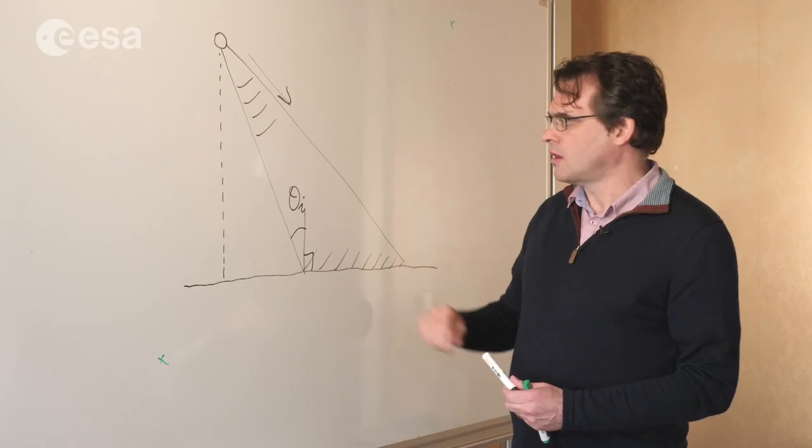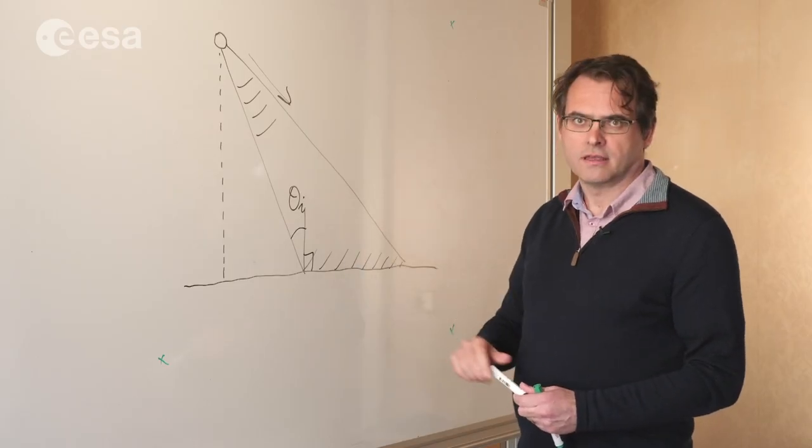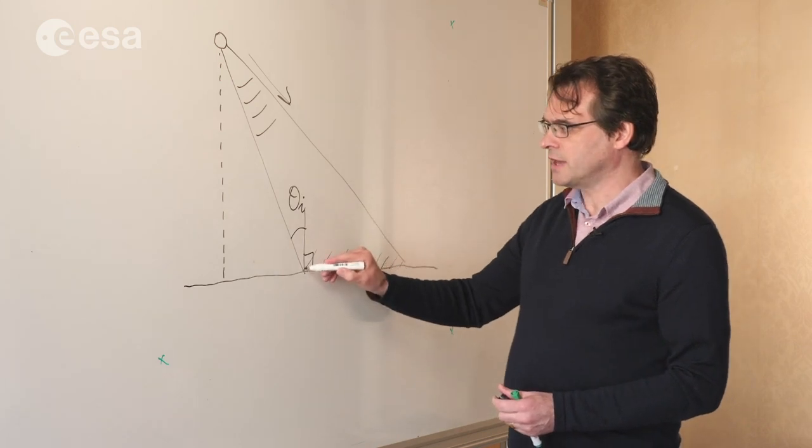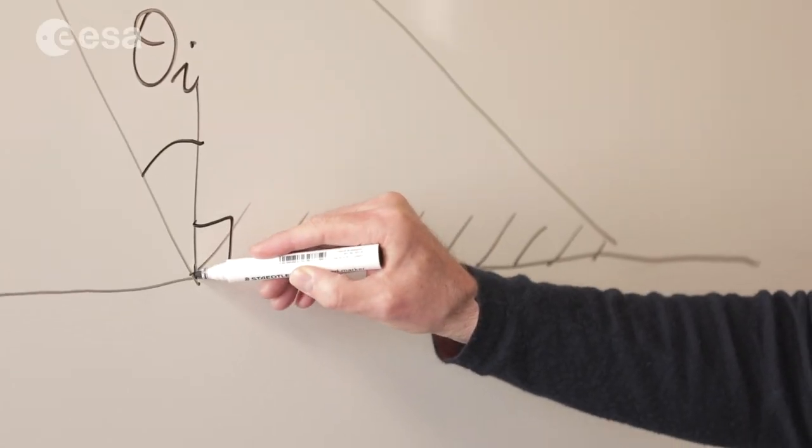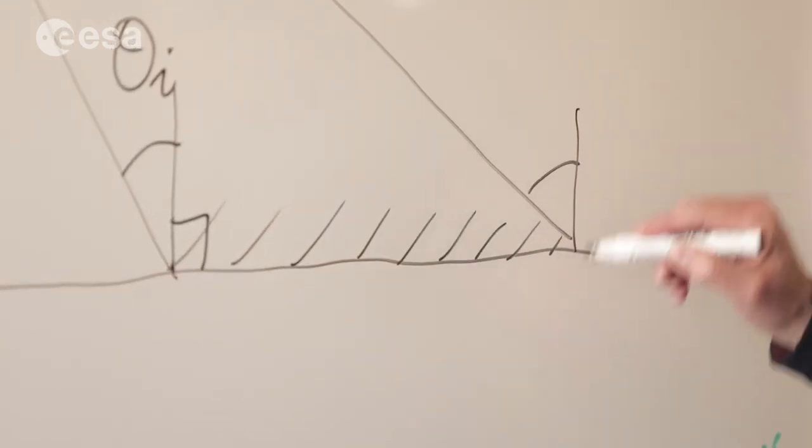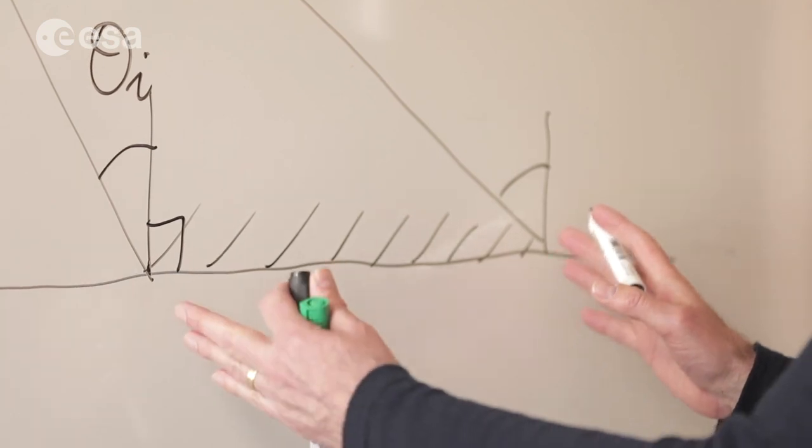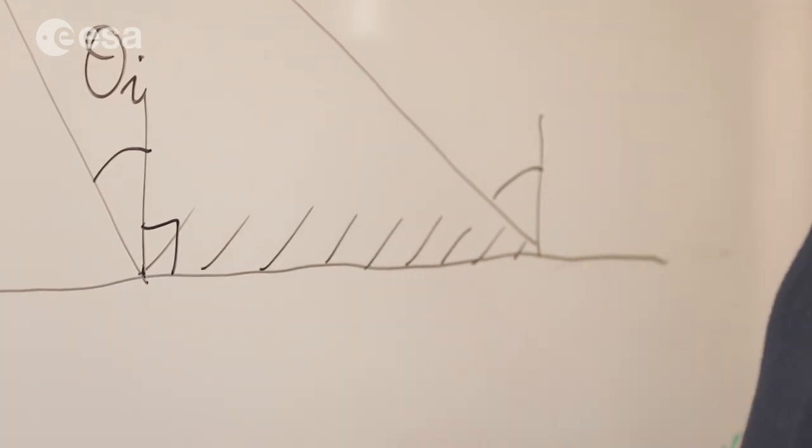often labeled as theta subscript i. The incidence angle then can be different at the near side of the swath to the far side of the swath. The swath is the area that we cover on the ground.